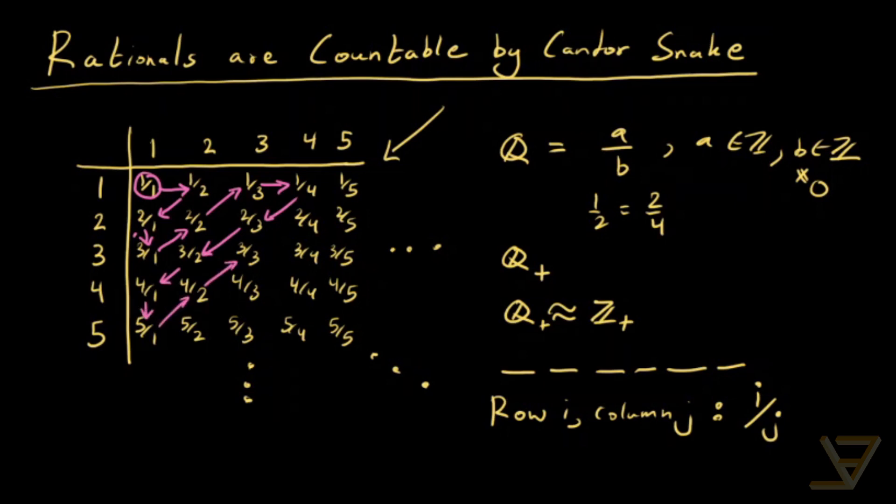So you can tell from this pattern, this snake-like pattern, where we're going like this. That's the Cantor snake. That eventually everything is going to get hit.